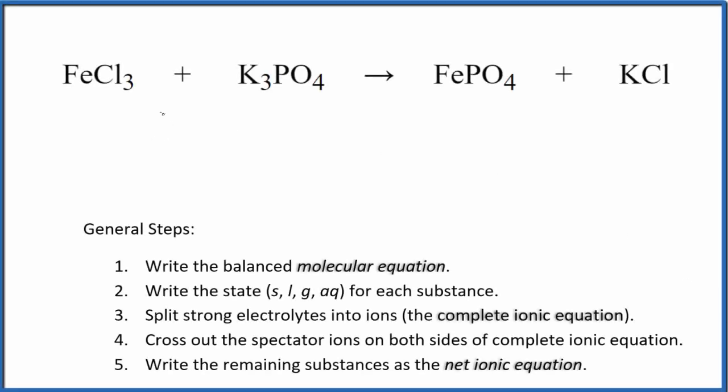In this video, we'll write the balanced net ionic equation for FeCl3 plus K3PO4. This is iron 3 chloride plus potassium phosphate. So the first thing we do with net ionic equations is we balance the molecular equation, and this is the molecular equation here.